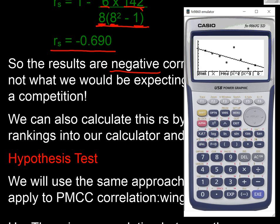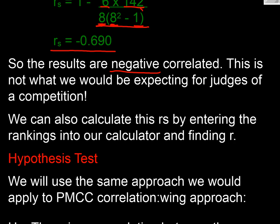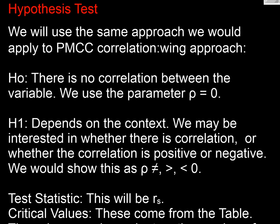That's what we were interested in, isn't it? Now suggesting that we've got a negative correlation going on, which is not what we want to see with a bunch of judges, is it? Okay, now we're going to do the hypothesis test with that data, and it's going to be very similar to what we saw before for Pearson.